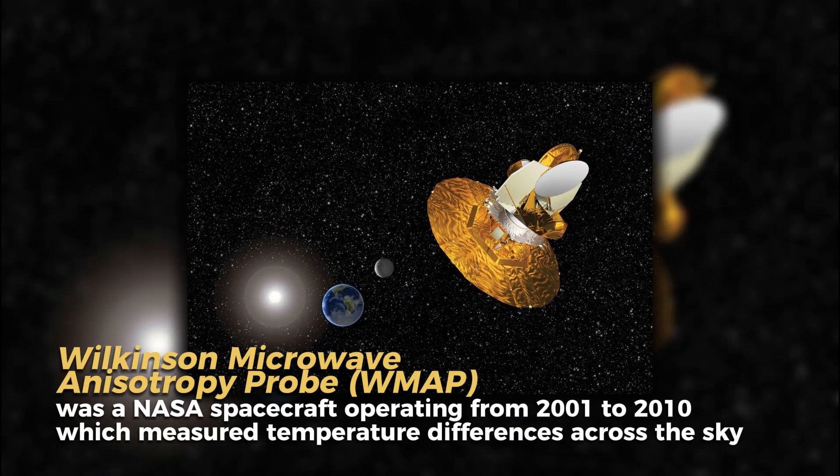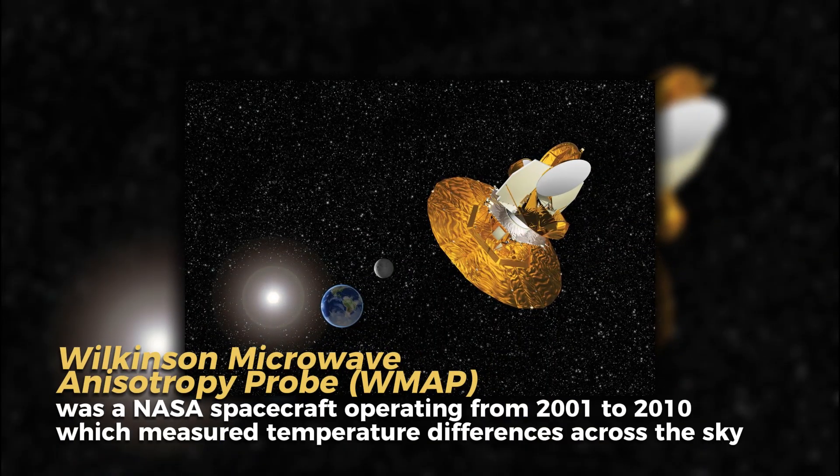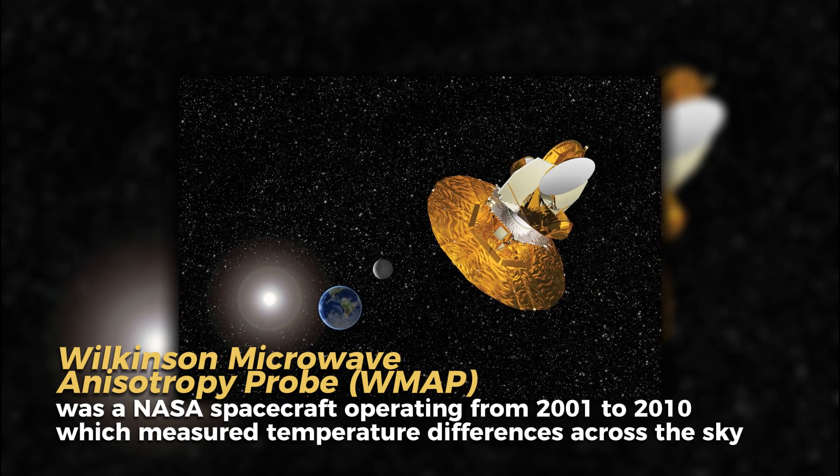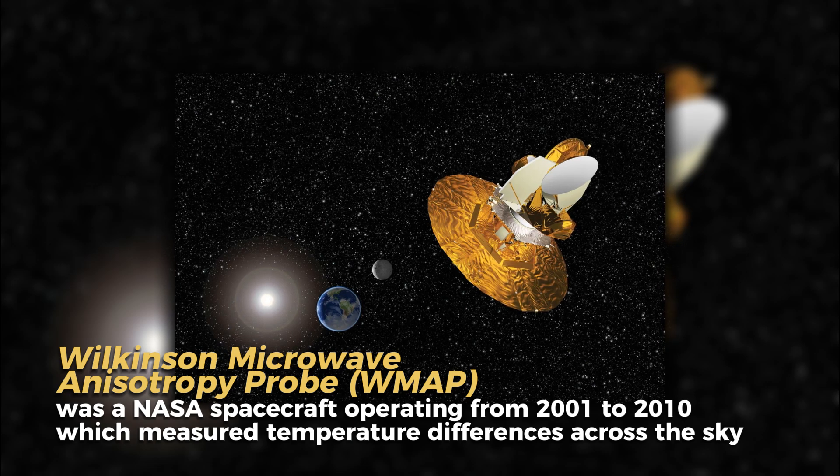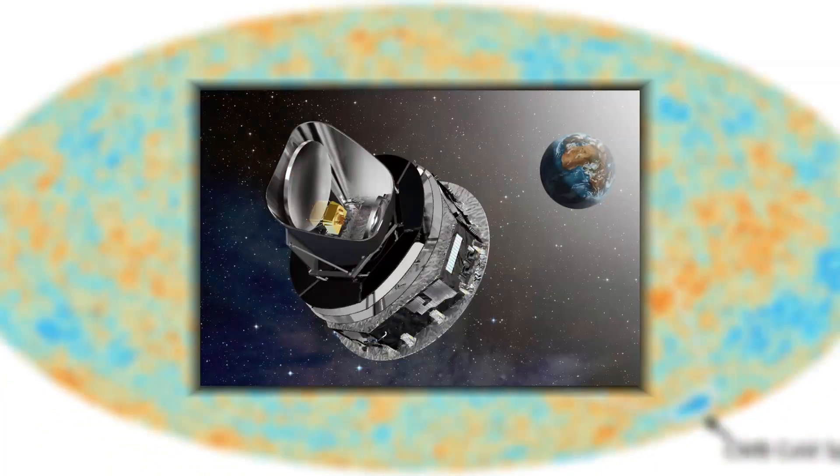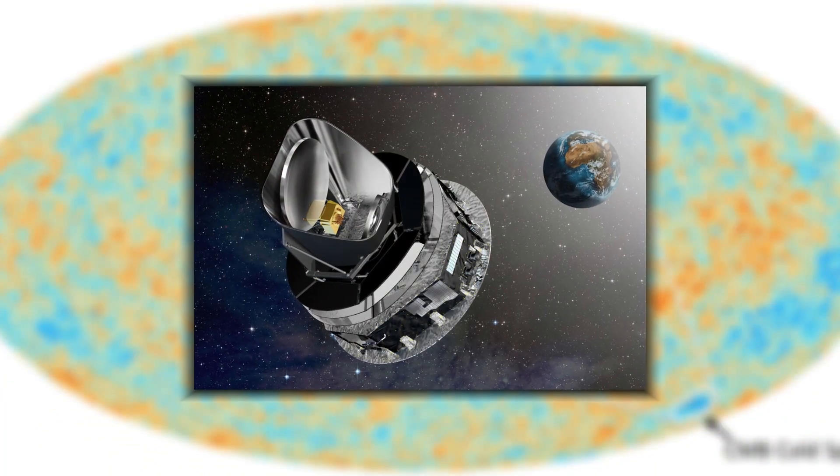The Cold Spot was first discovered in 2004 by the Wilkinson Microwave Anisotropy Probe, or WMAP for short. WMAP was a satellite that was designed to measure the temperature of the CMB. The Cold Spot was later confirmed by the Planck spacecraft, which was launched in 2009.